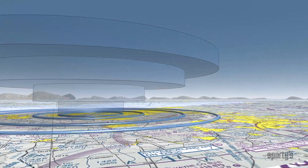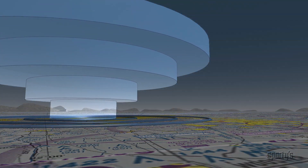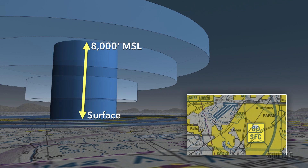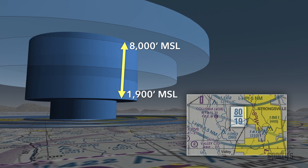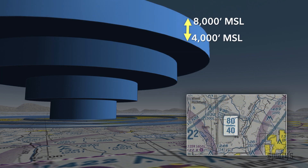Let's begin in the middle and work our way out. The top of the airspace is 8,000 feet MSL and in the vicinity of Cleveland International it extends to the surface. The next layer starts at 1,900 feet MSL, the next layer at 3,000 feet MSL and the outside layer begins at 4,000 feet MSL.